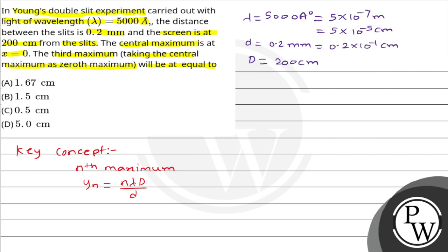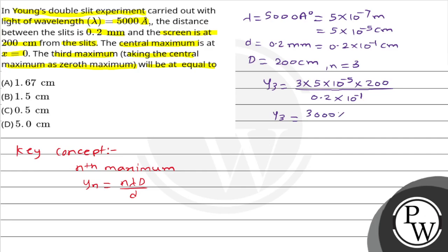Looking at the nth maximum formula, n is 3. So we need the third maximum from the center, with nth value equal to 3. Substituting: x = 3 × lambda × D / d = 3 × (5 × 10⁻⁵) × 200 / (0.2 × 10⁻¹).